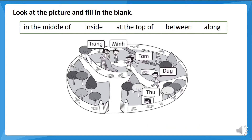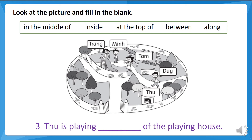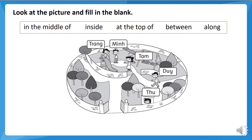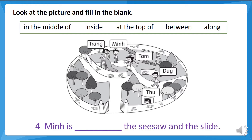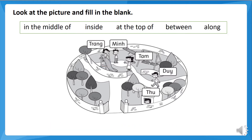Number three: where is TOO? Okay, TOO is playing inside the playhouse. Good. Number four: where is MING? MING is between the seesaw and the slide.